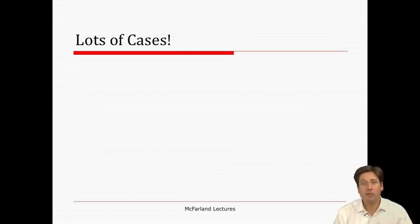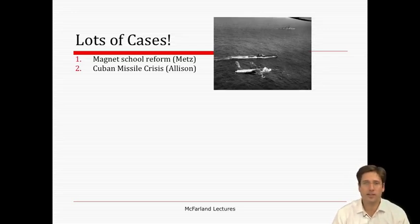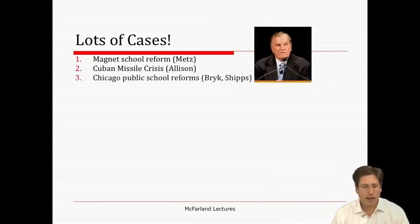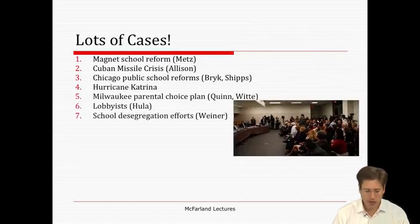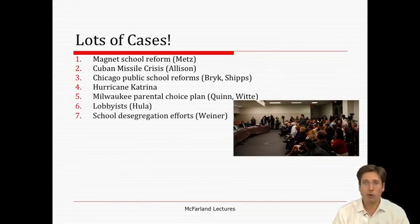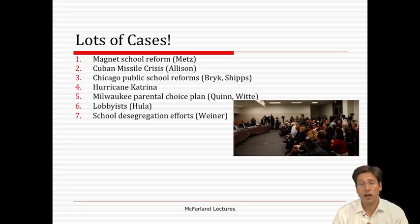Just to give you a sense of how far you've come, let's recall some of the cases you've covered. The first was about magnet school reform by Mary Metz. We had another about the Cuban Missile Crisis where Allison applied multiple theories. We had a couple of studies about Chicago public school reforms in the 80s and 90s. We talked about Hurricane Katrina and a variety of ways to interpret that disaster. We talked about the Milwaukee Parental Choice Program — a voucher program where parents get money to send their children to other schools. We talked about lobbyists running around Congress or legislatures trying to build coalitions.